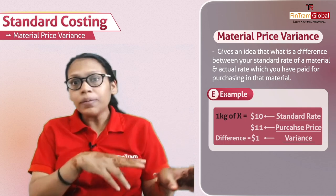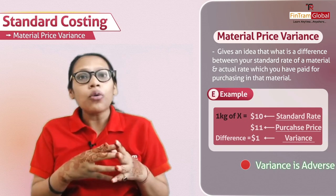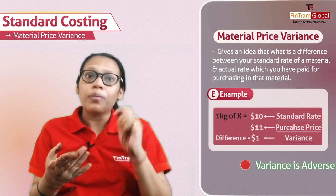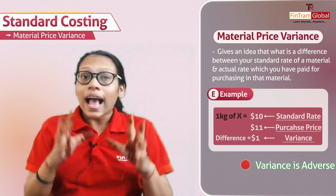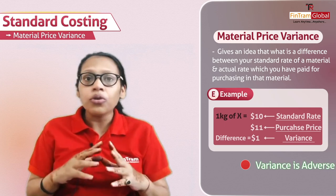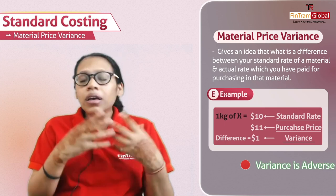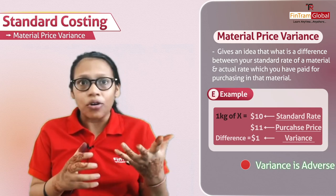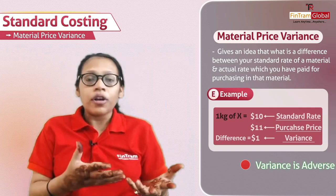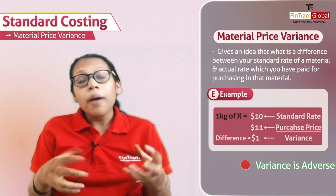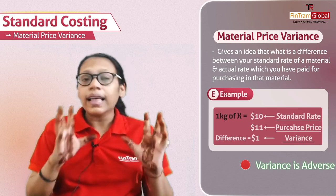In this scenario, the variance is adverse because we planned to purchase at ten dollars but actually purchased at eleven dollars — one dollar extra. When a variance is adverse, we look for other options and investigate the reasons: whether we did a bad negotiation, or because of inflation the price has gone from ten to eleven dollars, which may be out of our control.